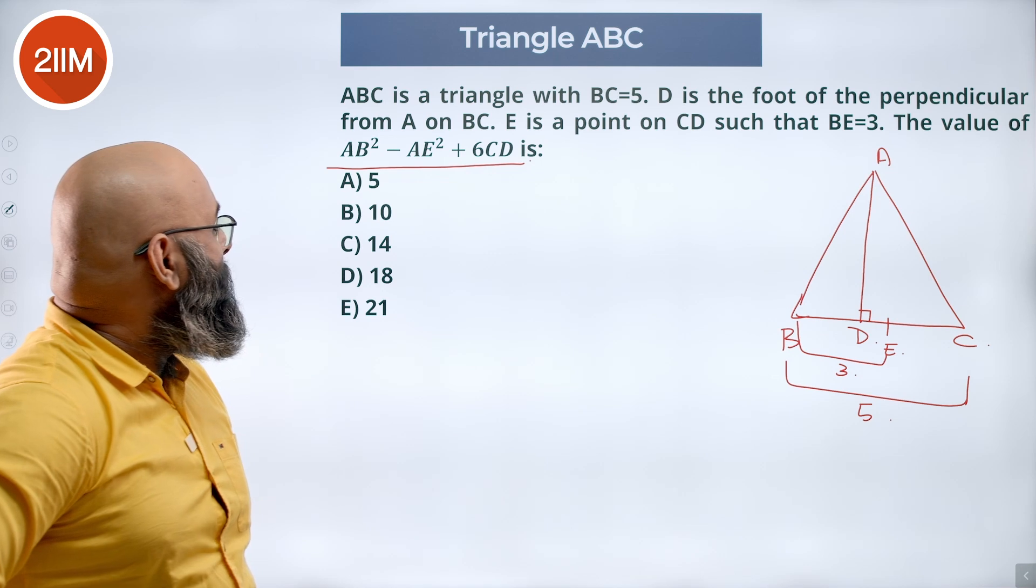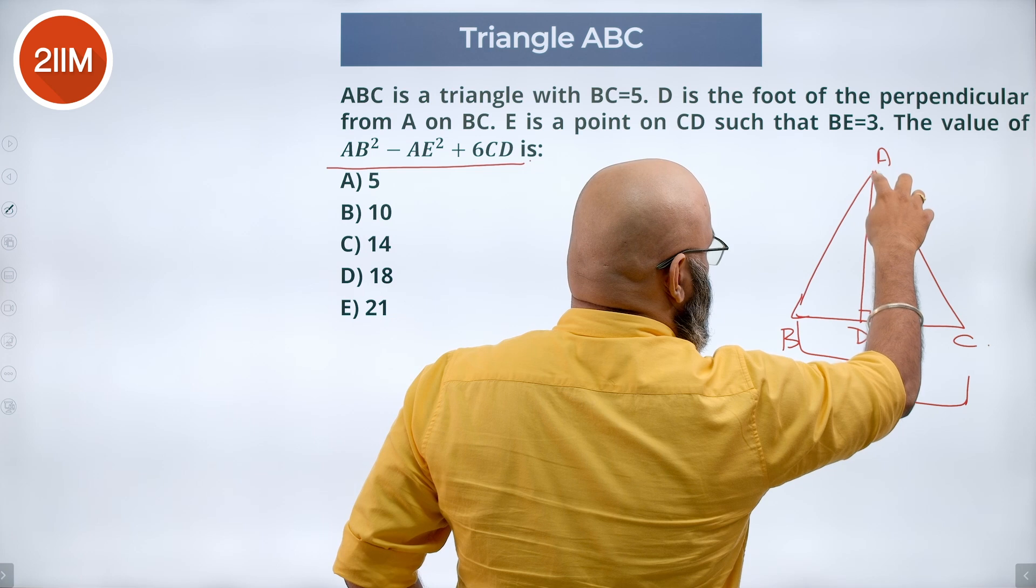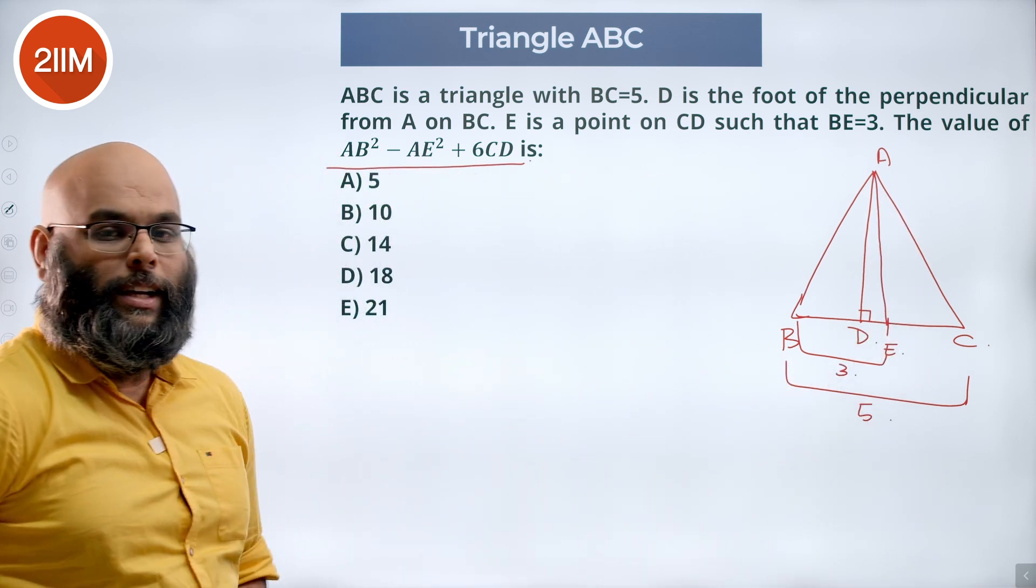The value of AB square, we have to know AB minus AE square. So let me draw a line here. AE square plus 6CD.